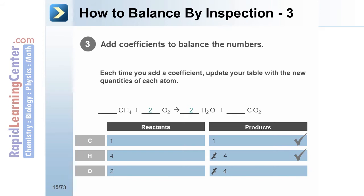Placing a 2 in front of the O2 molecule on the reactant side changes the number of oxygen atoms on the reactant side. All of the elements are now balanced.